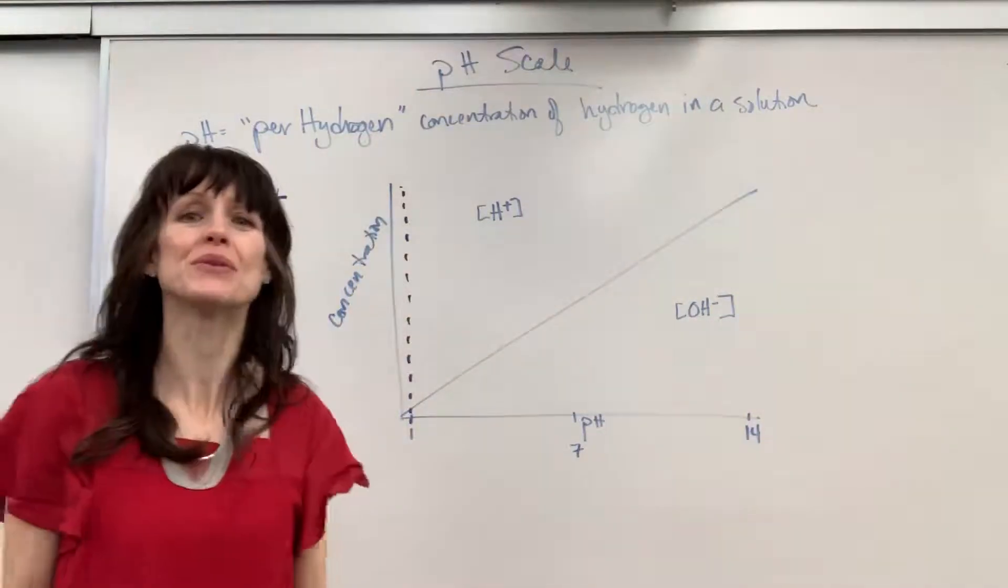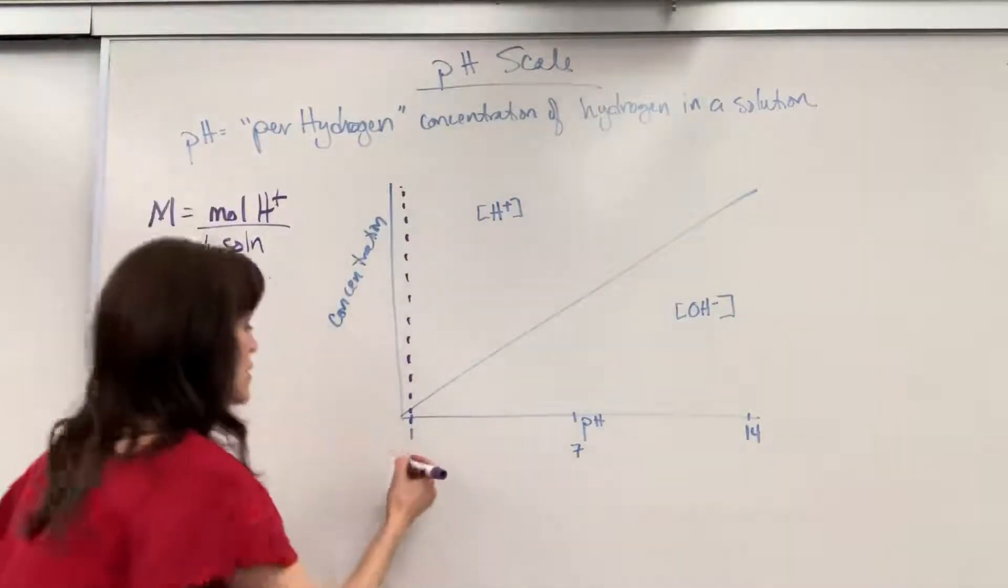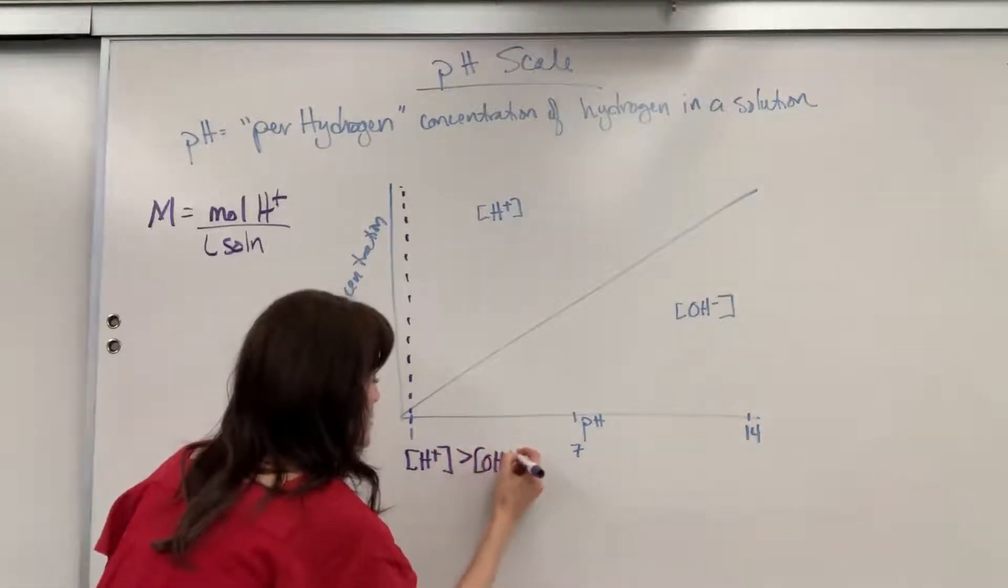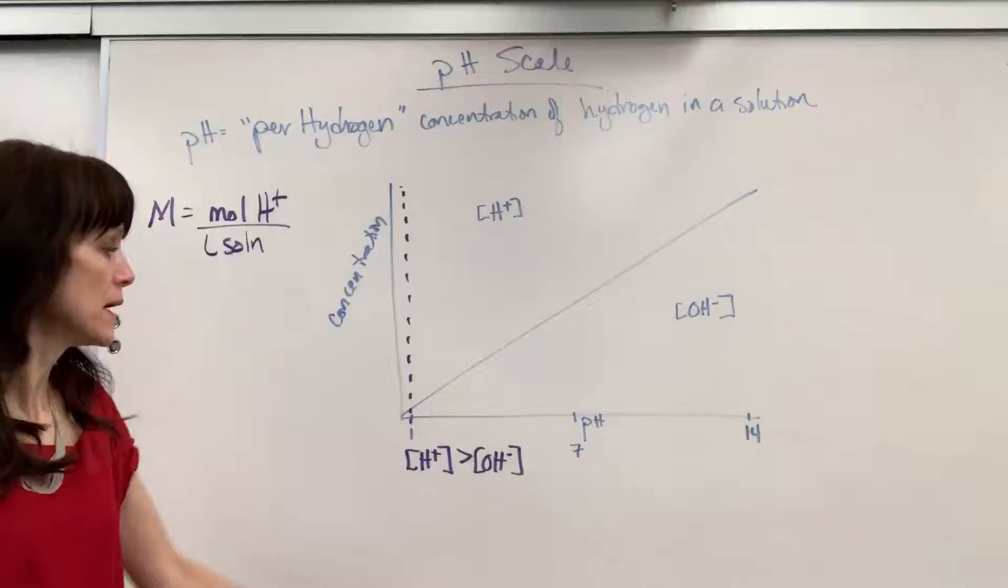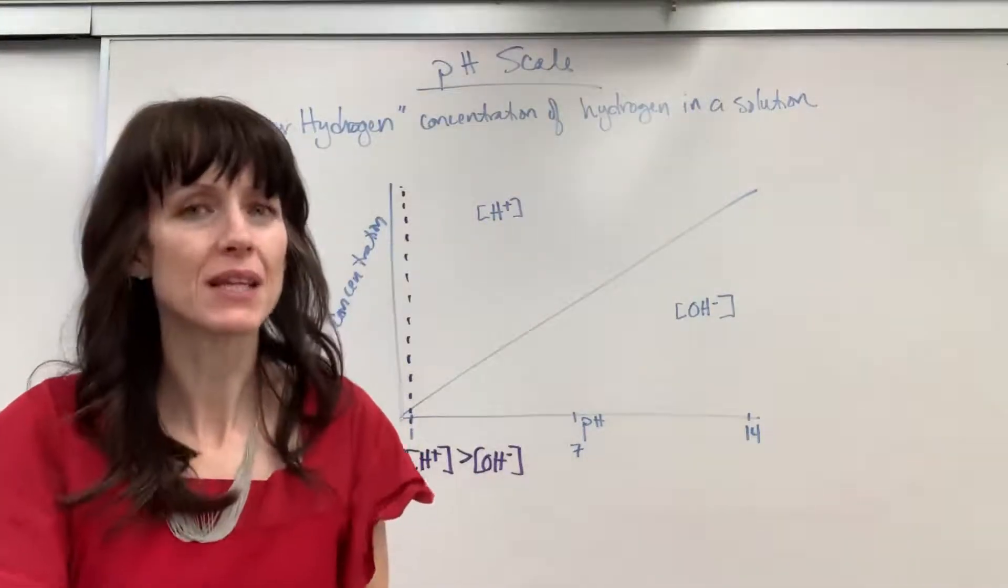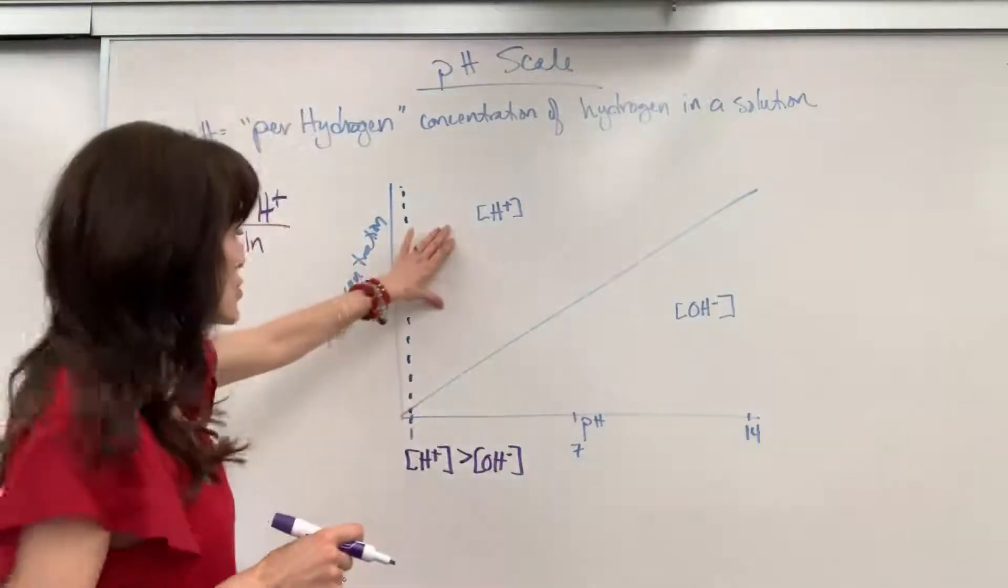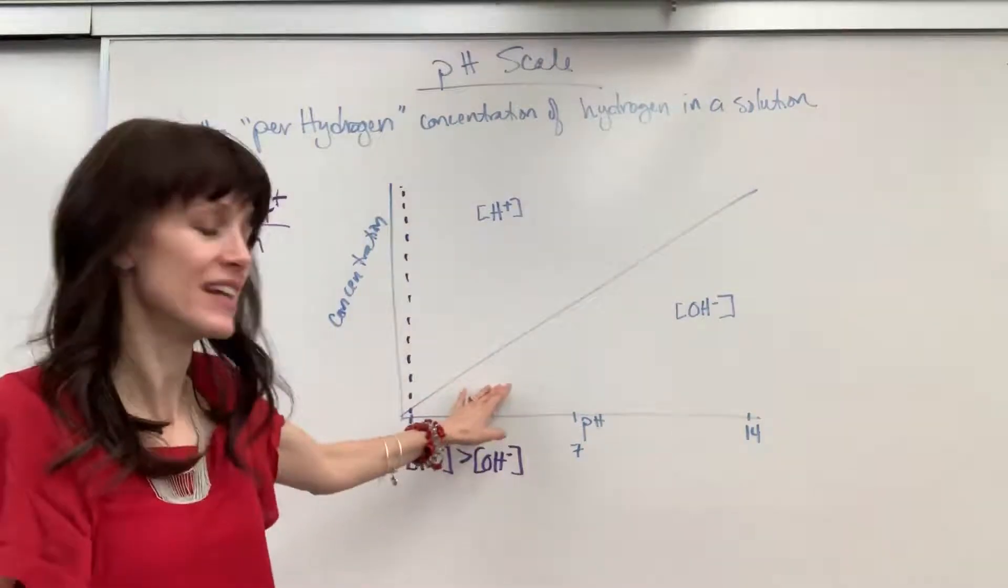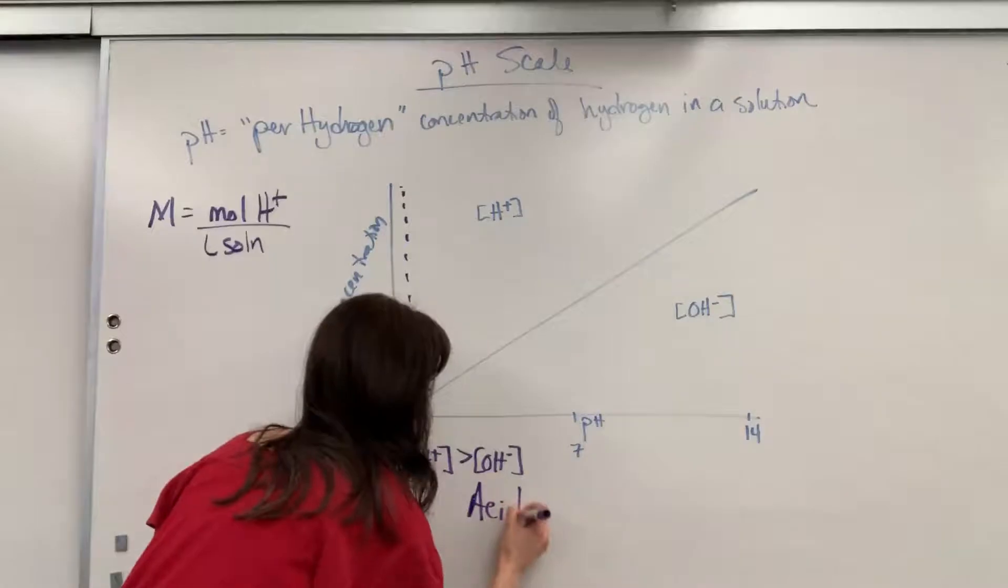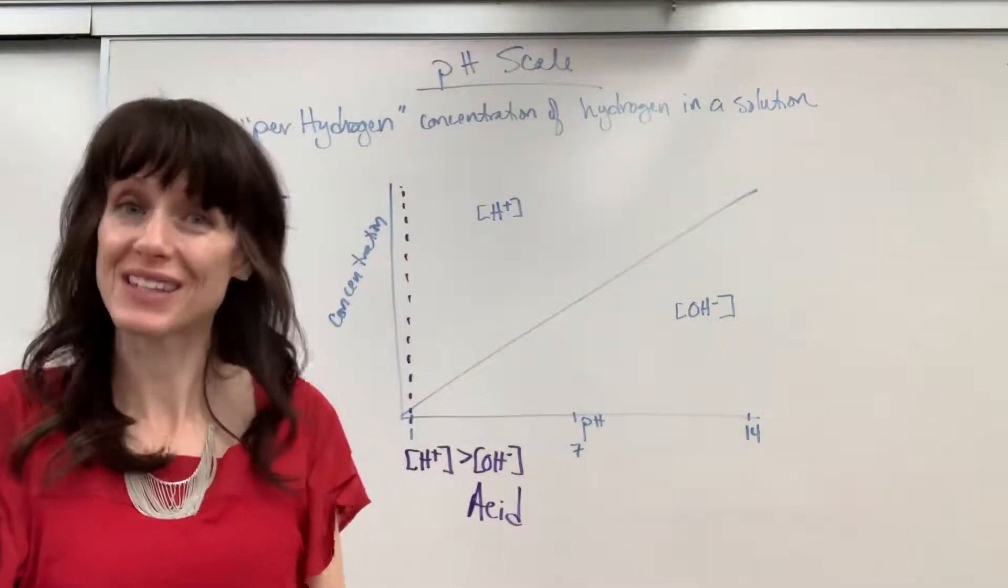So here is a huge takeaway for you. When we have a pH less than 7, the concentration of the hydrogen is greater than the concentration of hydroxide. So notice when we have a low pH, that doesn't mean that I don't have any hydroxide. It just means I have more hydrogen ion than I do hydroxide ion. That is the summation of an acid. So anything less than 7 is considered an acid because it has more hydrogen than hydroxide.